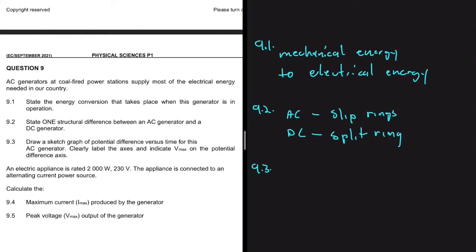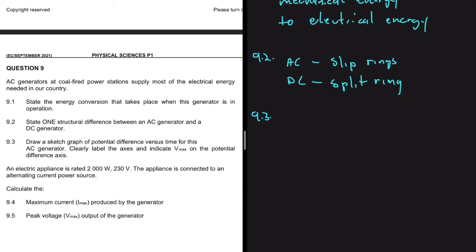And then 9.3, draw a sketch graph of potential difference versus time for this AC generator. Clearly label the axis and indicate Vmax on the potential difference axis. So what is an AC generator? An AC generator produces alternating current. But then what do we mean by alternating current? The current changes direction every half circle. So if you want to plot a potential versus time graph,